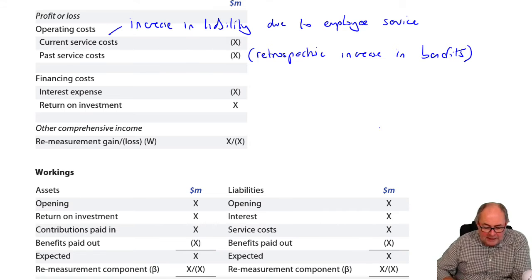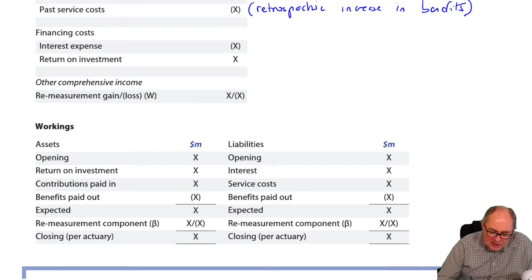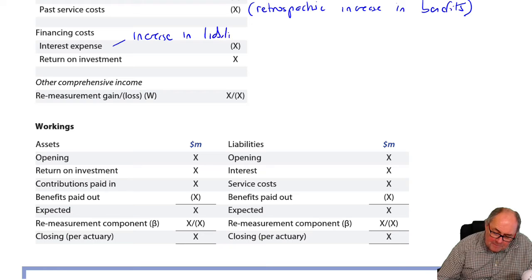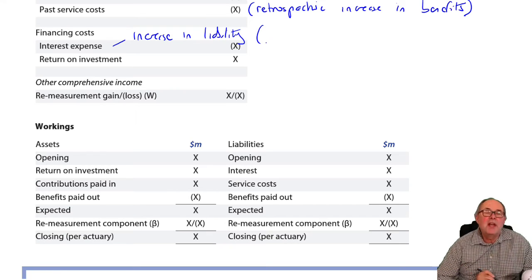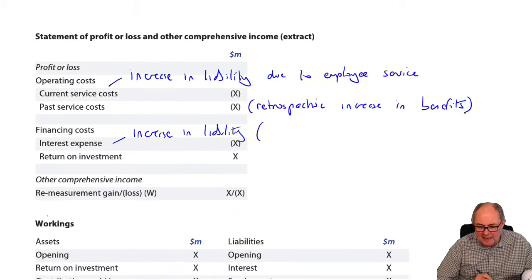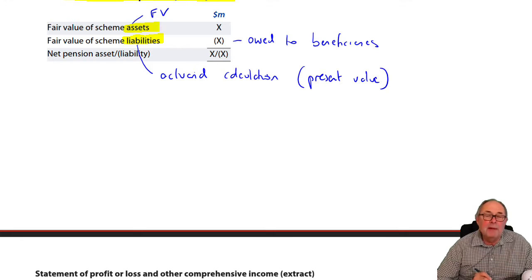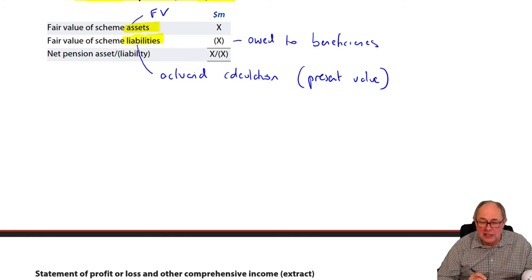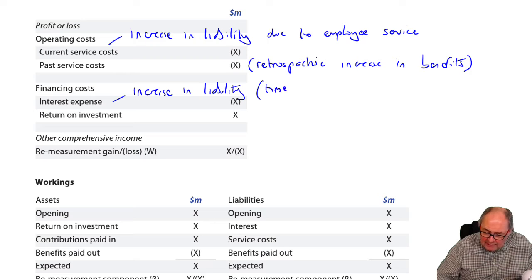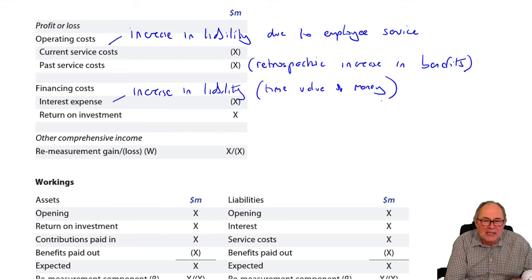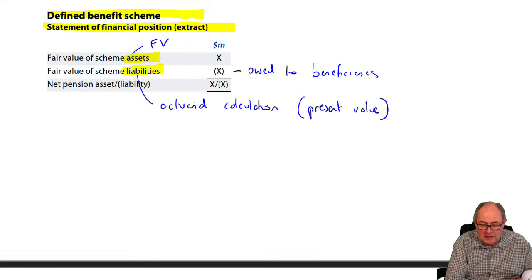Two other things normally change. There is the interest expense — another increase in the liability — because the liability is measured at present value. As the discount unwinds, that causes another charge in the P&L, to do with the time value of money. The pension liabilities increase because the employees work (that's the service cost) and because they get closer to retirement (that's the interest cost).